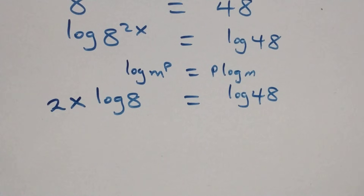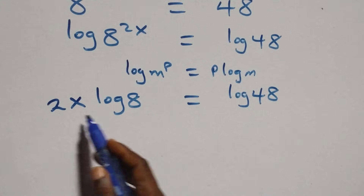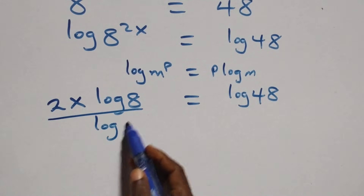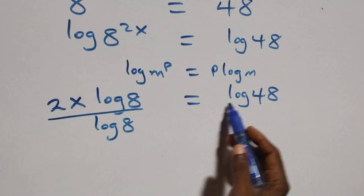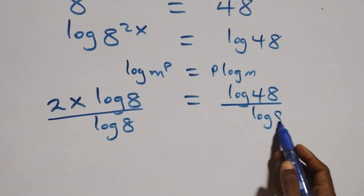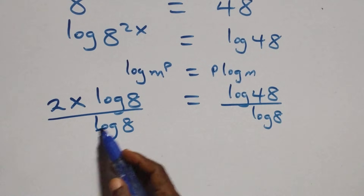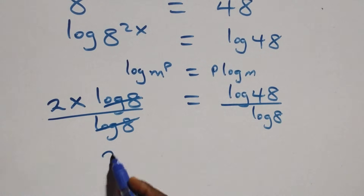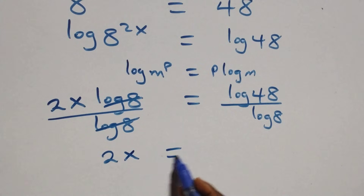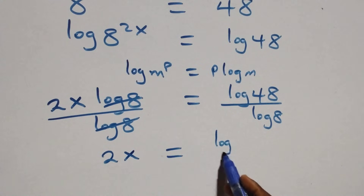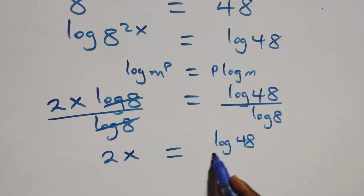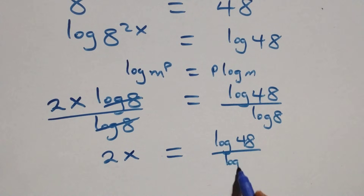The next step is to divide all sides by log 8. Log 8 cancels on the left side, and we have 2x equals log 48 over log 8.